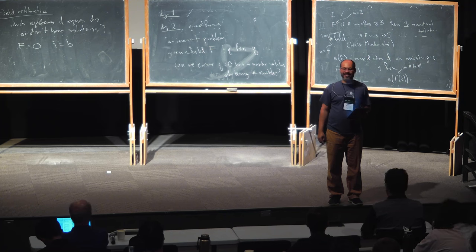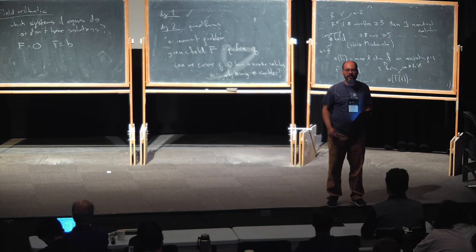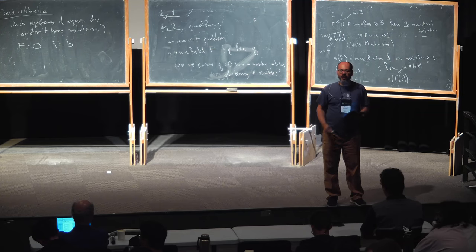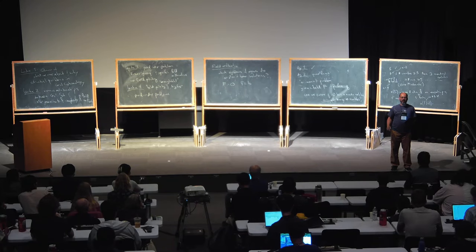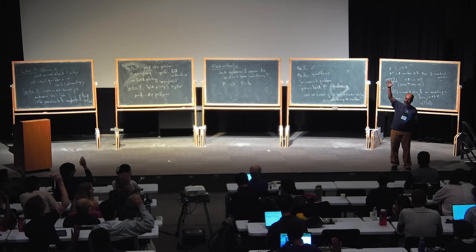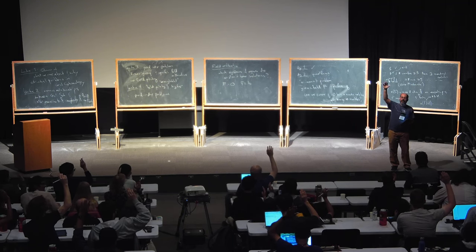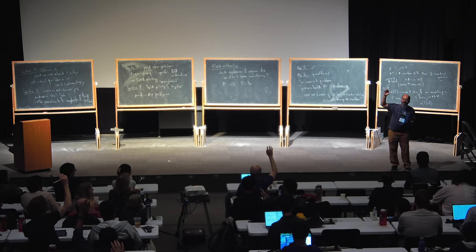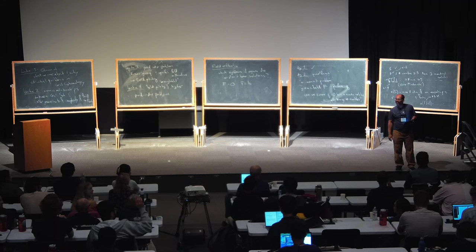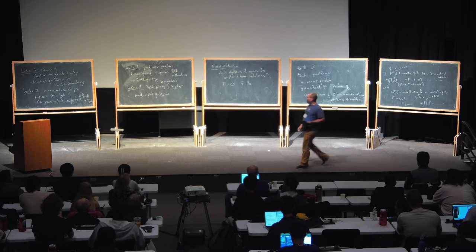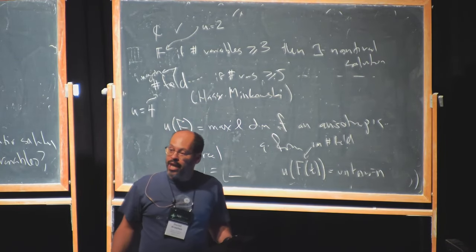Mark says eight, because there's a pattern — it looks like it's doubling. Let's just take a quick poll. Who thinks the answer is eight? Who thinks it's bigger than eight? Okay, I'll stop torturing you. This is unknown. It's conjecturally eight, but it's not known whether or not it's finite at all — as far as we know, there could be a 3,000-dimensional form with no non-trivial zeros.